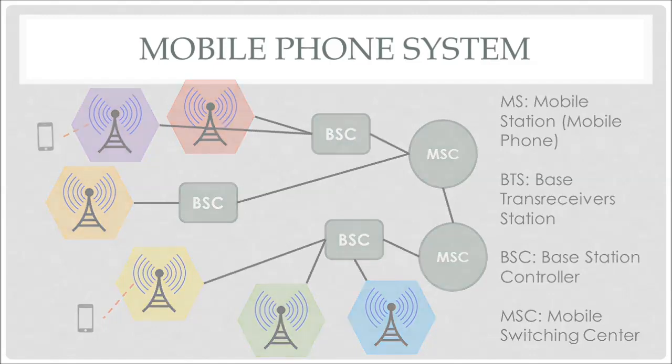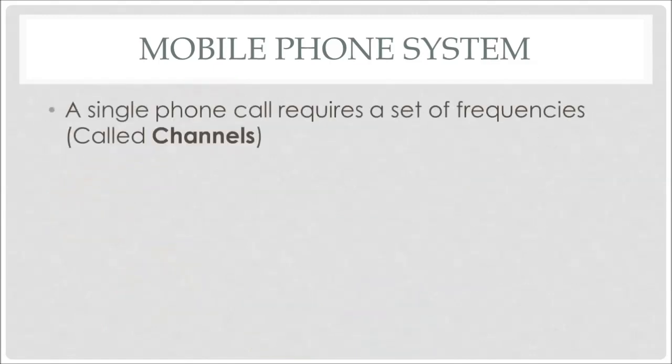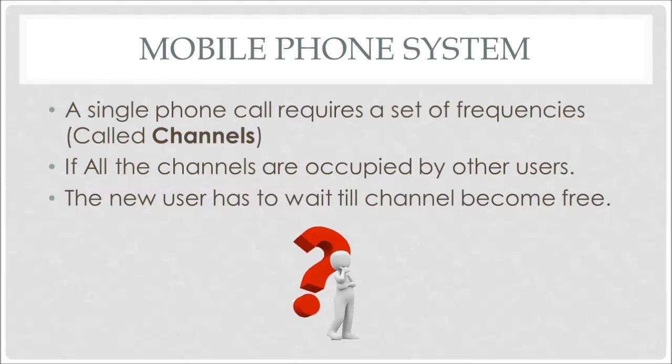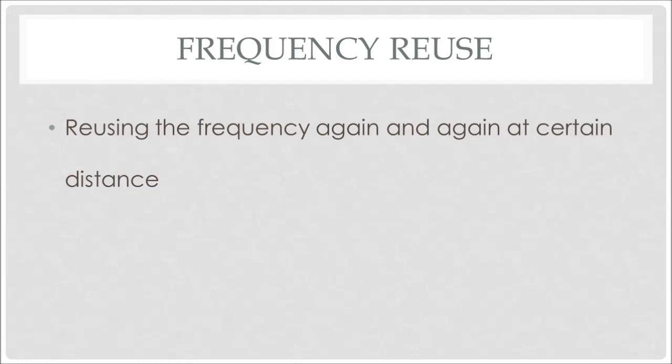By now it is clear that for communication, a user requires a set of frequencies called a channel. But if these channels are occupied by other users, the new user has to wait for a free channel. To minimize this issue, the mobile communication system uses a concept called frequency reuse — which is reusing the same frequency again and again at a certain distance.